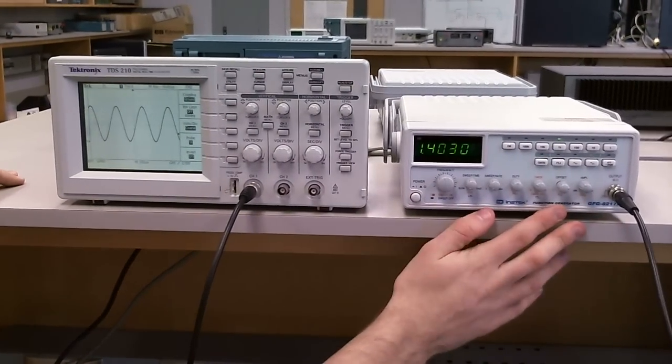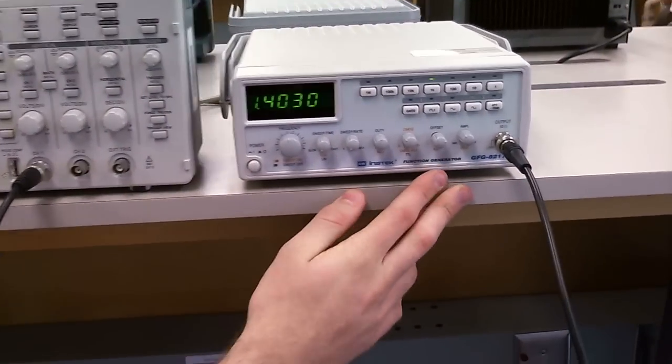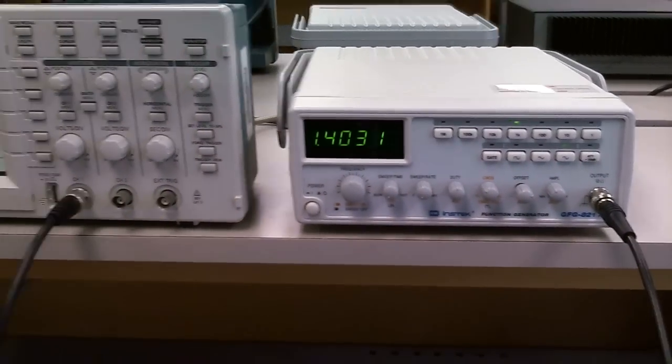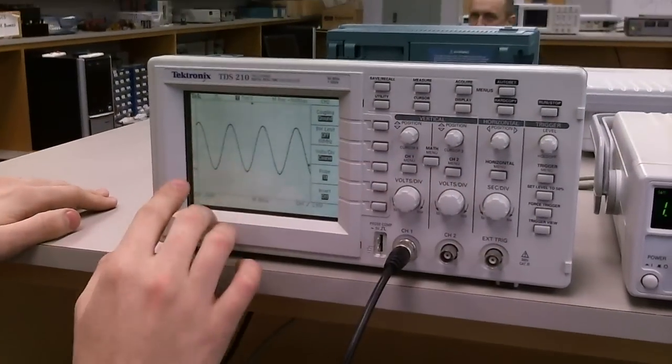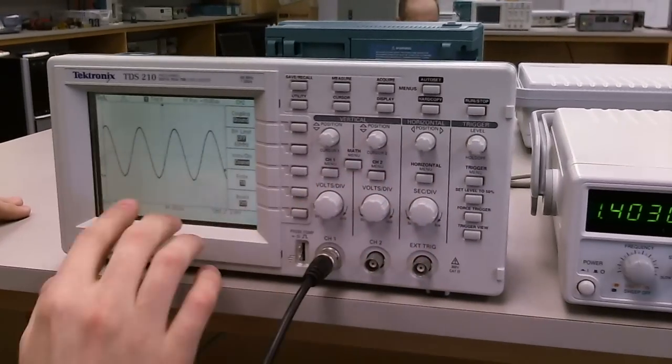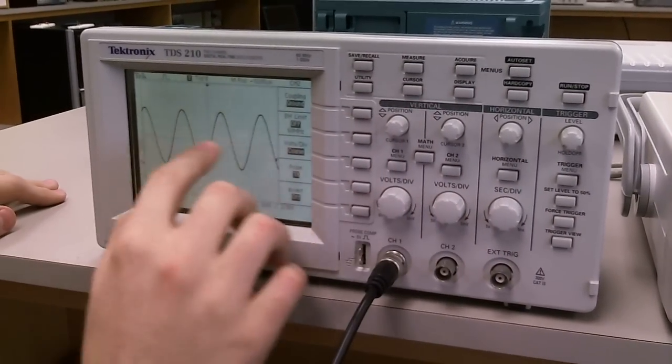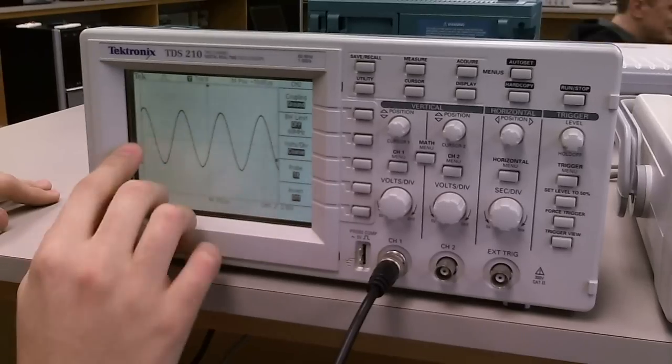So here we have a function generator generating a particular sine wave of a particular amplitude and offset. And we're going to go ahead and measure the amplitude. So the amplitude right now would be the distance from the middle of the wave to the top or the bottom.